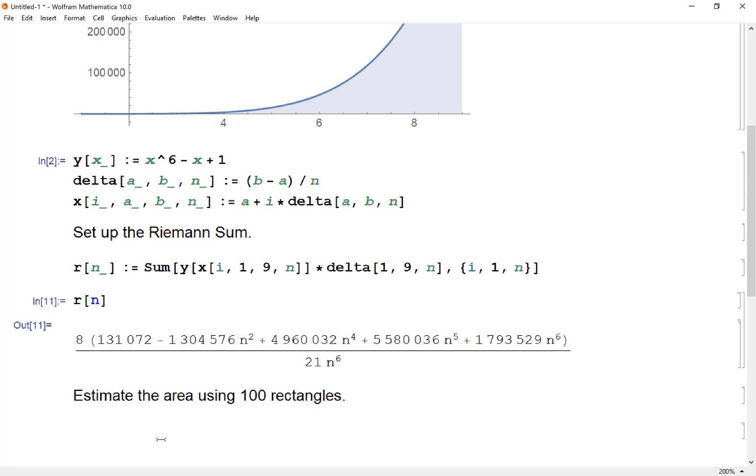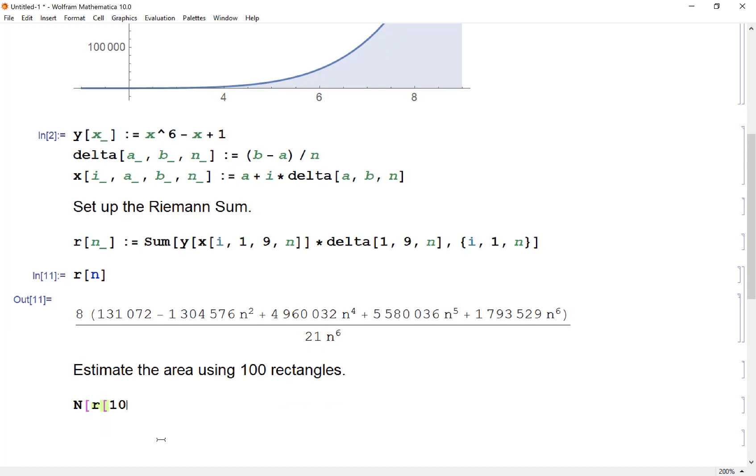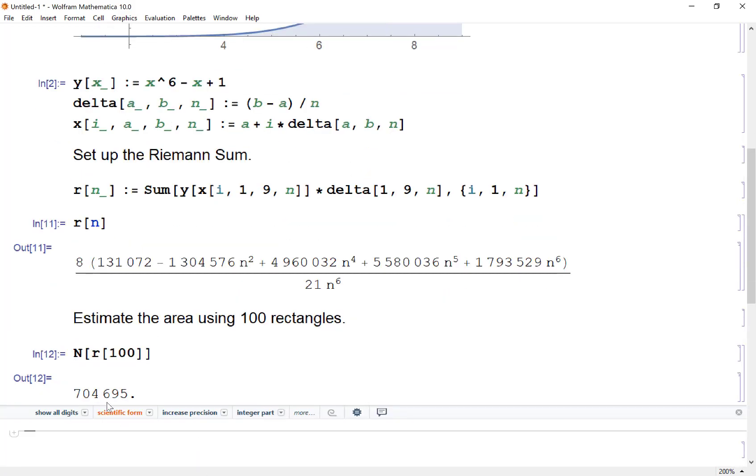So now I can answer questions like this. Can you estimate the area under the curve using a hundred rectangles? Yeah, I'm just going to say n R of a hundred. And there it is. About seven hundred four thousand six hundred ninety five would be the estimate using a hundred rectangles.